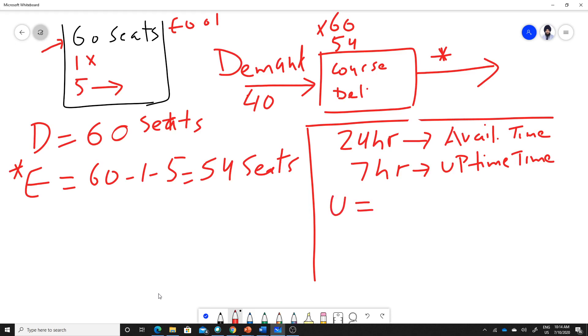It's going to be uptime over available. If you use this, utilization is only 29%. Over the course of a given day, 29% of the time is utilized.